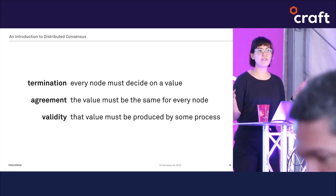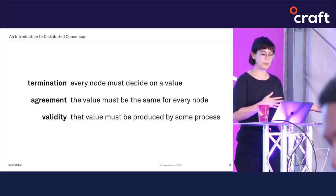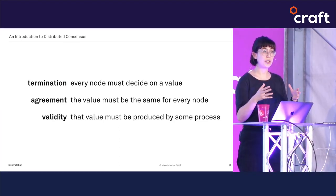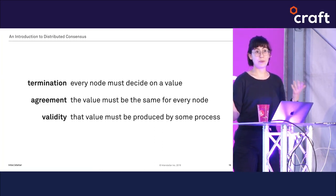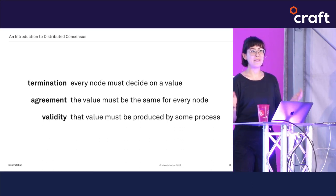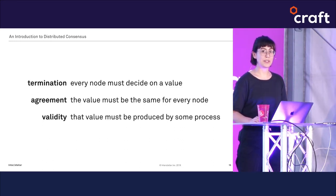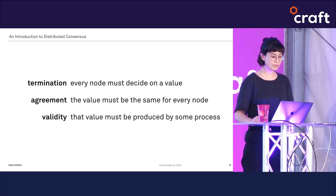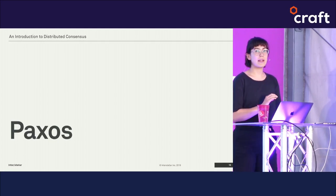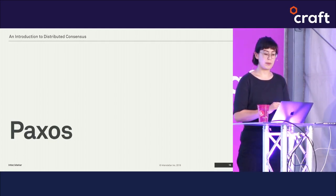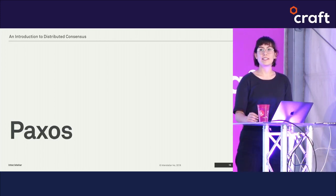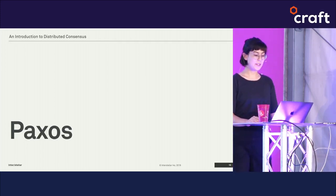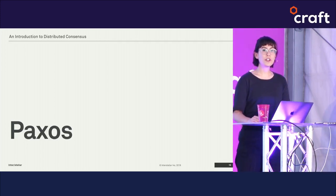That doesn't sound so strict, and our five-node example was trying to solve this strict formulation. But this is all easier said than done. Some of the algorithms I'll show you later may not solve such a strict formulation, but I want to begin by discussing an algorithm that does solve this strong consensus problem — one of the oldest: Paxos.